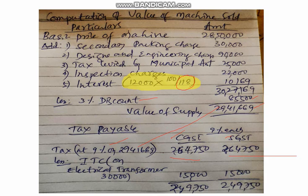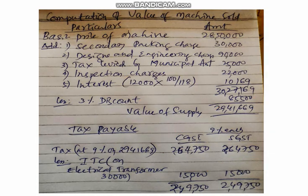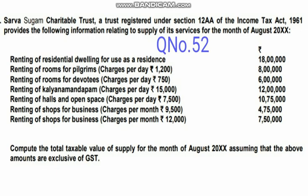After that, the input tax credit from the transformers case — already you have ITC of 15,000 rupees each for SGST and CGST — is deducted. Your net tax liability is CGST 2,24,9,750 and SGST 2,24,9,750. I hope question number 51 is clear to each one of you. Move to the last question.